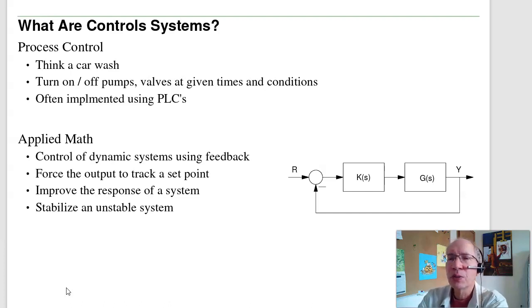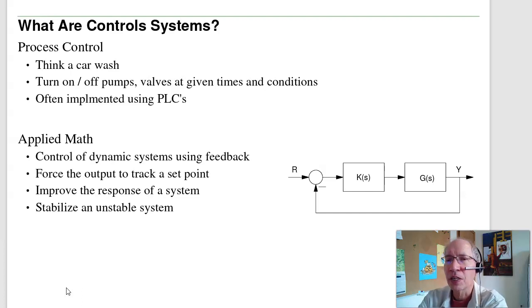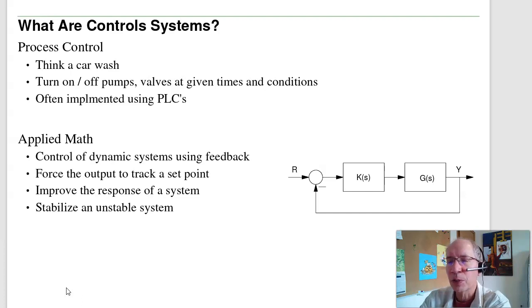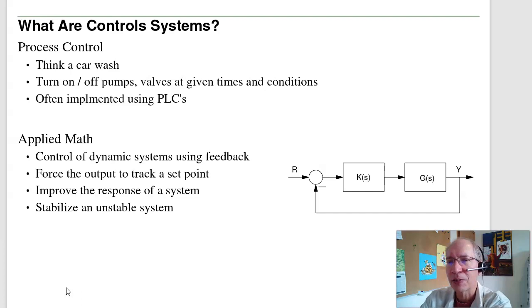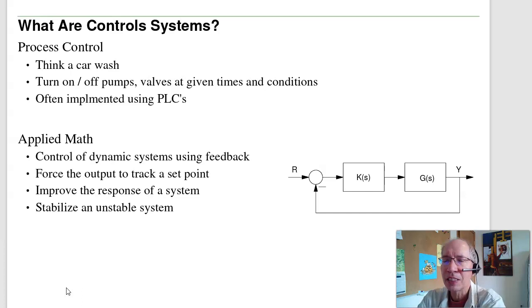Controls is a generic term — it can mean many things. One meaning is process control. Think of a car wash: when you pull your car forward, a pump turns on, water turns on and off — things basically turn on and off at different times. One way to implement that is a programmable logic controller, or PLC.